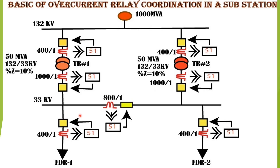In this lecture, I will discuss the basics of overcurrent relay coordination in a particular substation. The single line diagram shown is for a 132 by 33 kV substation. This substation has two 50 MVA, 132 by 33 kV transformers, each with a percentage impedance of 10%. On the 33 kV bus, two feeders are considered for ease of understanding, and there is one bus coupler breaker with the two feeders connected on each side of it.